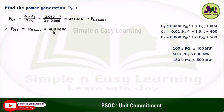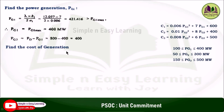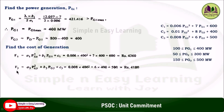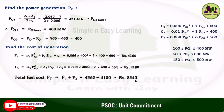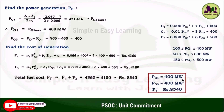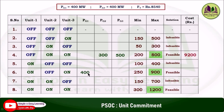Since unit 1 and unit 3 are running and unit 1 supplies 400 megawatt, unit 3 will supply the remaining. So pg3 equals pd minus pg1, which is 800 minus 400 equals 400 megawatt. Find the cost: f1 equals 0.006 into 400 squared plus 7 into 400 plus 600, giving rupees 4360. f3 gives rupees 4180. Total fuel cost is rupees 8540. Conclusion for case 6: pg1 equals 400 megawatt, pg3 equals 400 megawatt, total fuel cost is rupees 8540. Substituting in the unit commitment table: pg1 equals 400, pg3 equals 400, cost is 8540.